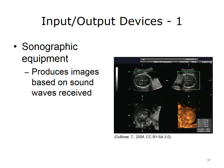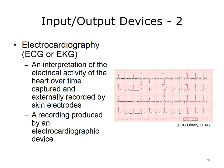An output device that also acts as an input device is sonographic equipment. These devices produce images based on sound waves. The image on this slide shows output from a sonograph — an ultrasound image as a 3D image on the screen. Another device that acts as both input and output is the electrocardiography or EKG machine. The EKG machine provides an interpretation of the electrical activity of a heart over time, captured and externally recorded by skin electrodes. The output of an EKG is a graph of the heart's electrical activity.